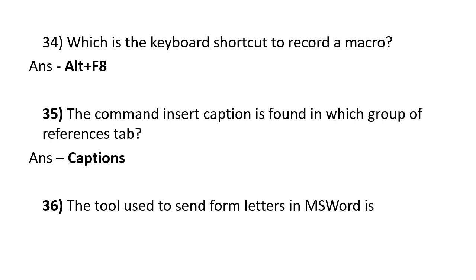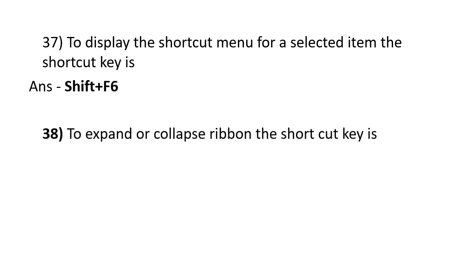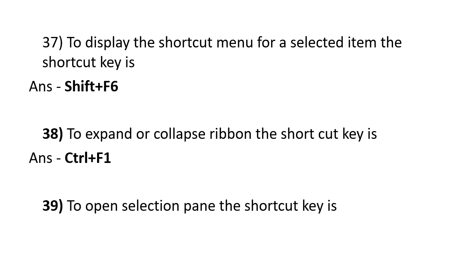The tool used to send form letters in MS Word is Mail Merge. To display the shortcut menu for a selected item, the shortcut key is Shift plus F10. To expand or collapse the ribbon, the shortcut key is Ctrl plus F1. To open the Selection Pane, the shortcut key is Alt plus F10.